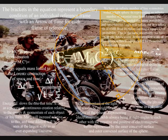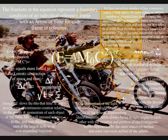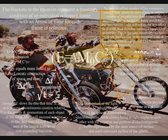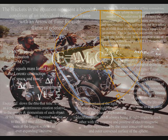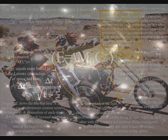The brackets in the equation represent a dynamic boundary condition of an individual reference frame, with an arrow of time for each frame of reference. The infinity symbol represents an infinite number of dynamic, interactive reference frames that are continuously coming in and out of existence.